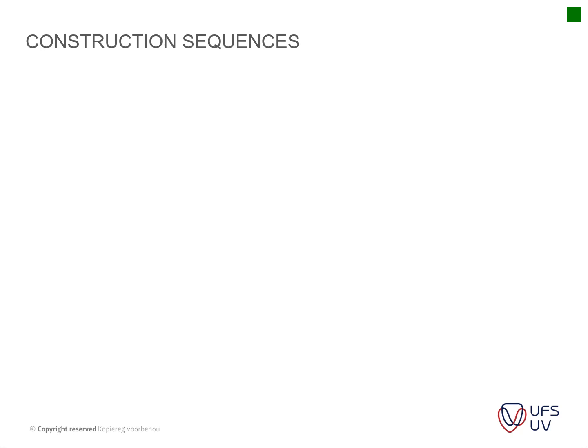If you look at your construction sequence, there is a certain thought process that you go through. Many of you already in the industry may have learned a process you already follow. Some people do it differently — some work according to the BOQ items in the trades, others from a template they've worked with before. What we're going to explain here is basically the process that everyone uses. Your program considerations will depend on your specific project. A road construction project will be different from a typical building project, because certain sections of the program will repeat depending on the amount of cut and fill on your roads.